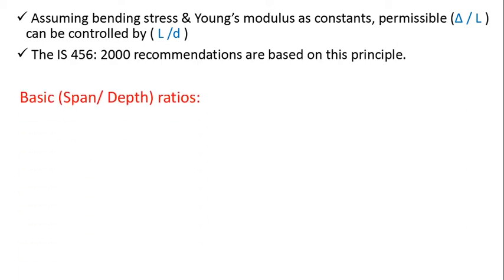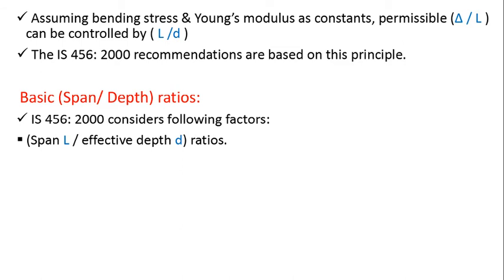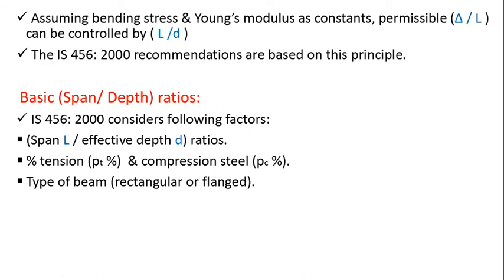Basic span by depth ratio - IS 456-2000 considers the following factors: span by effective depth ratio; percentage tension (pt%) and compression steel (pc%); type of beam, whether it is rectangular or flanged (flanged means T beam or L beam); type of supports, that is simple, fixed or continuous.